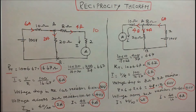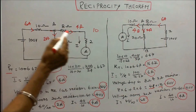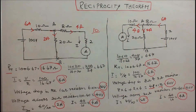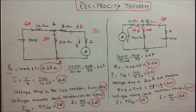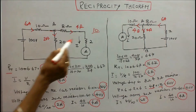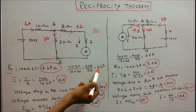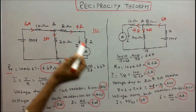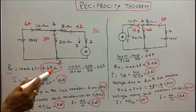First step: find the total resistance. The 8 ohm and 2 ohm are connected in series, so their total is 8 plus 2 equals 10 ohms. The 10 ohm resistor is connected in parallel with the 20 ohm resistor, giving an equivalent resistance of 20 into 10 divided by 10 plus 20, which equals 200 by 30, or 6.67 ohms. The 6.67 ohm resistor is in series with the 10 ohm resistor, so the total resistance is 10 plus 6.67, equal to 16.67 ohms.